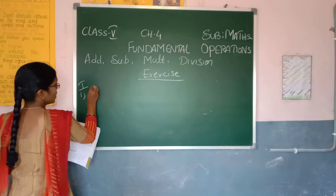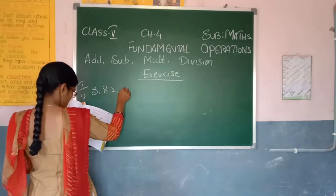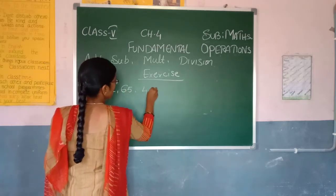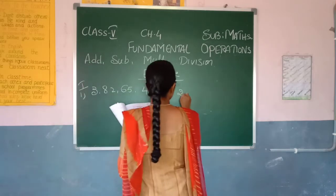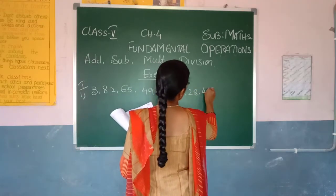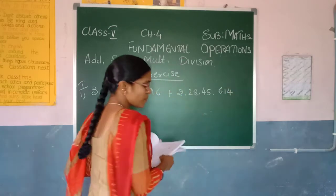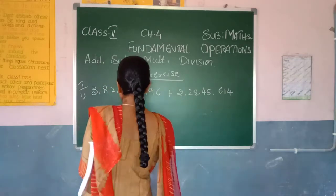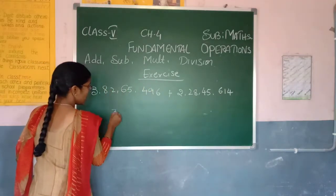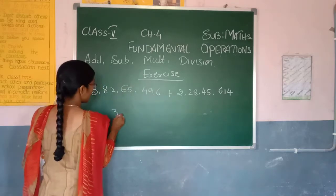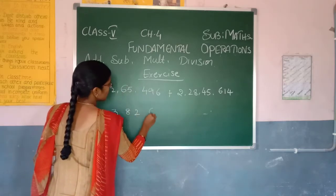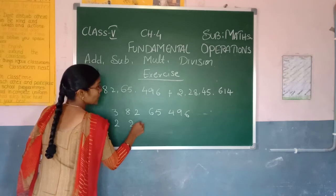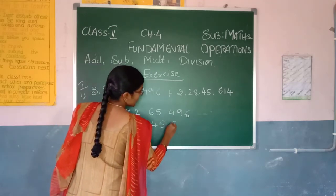See the first one — what is written? Three crores, eighty-two lakhs, sixty-five thousand, four hundred and ninety-six. And the second number: two crores, twenty-eight lakhs, forty-five thousand, six hundred and fourteen. First you have to write the numbers, then arrange them by place value: two, eight, two, six, five, four, nine, six — and two, twenty-eight, forty-five, six hundred and fourteen.